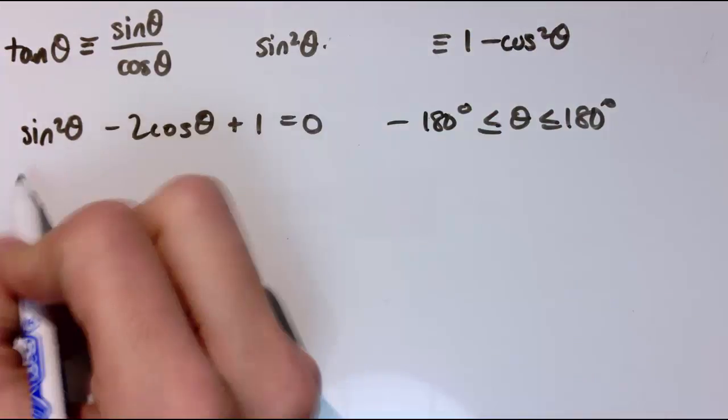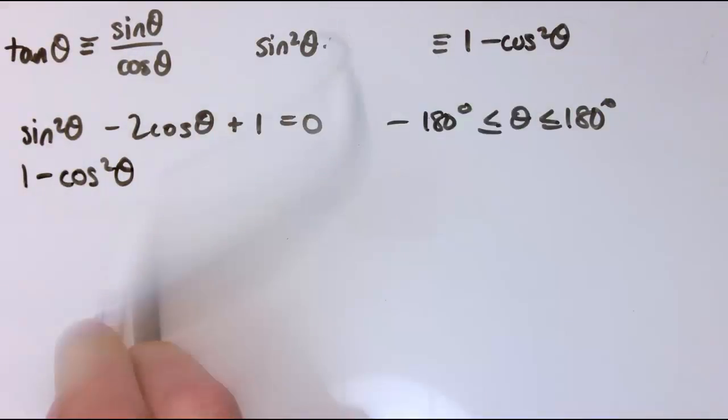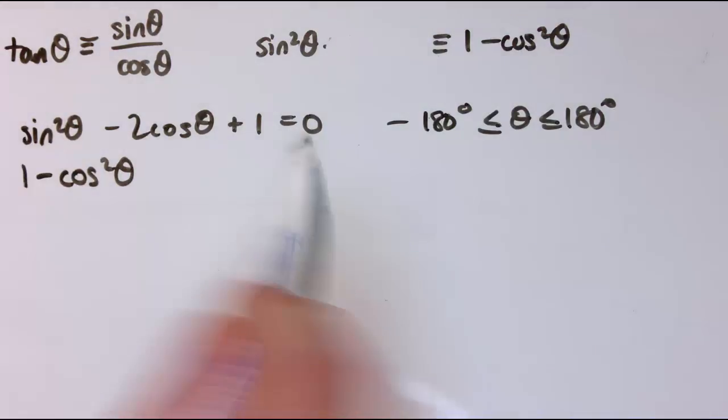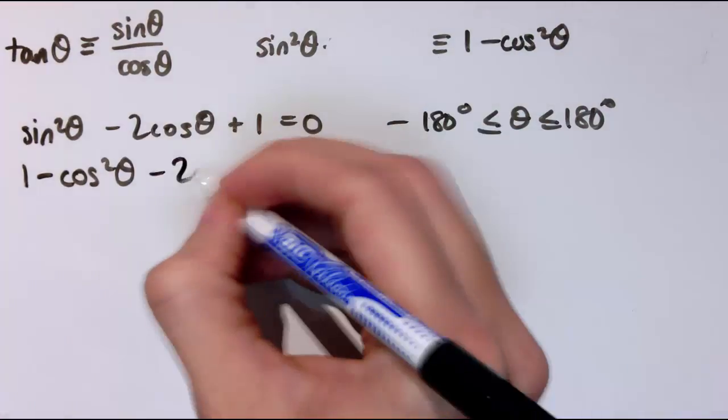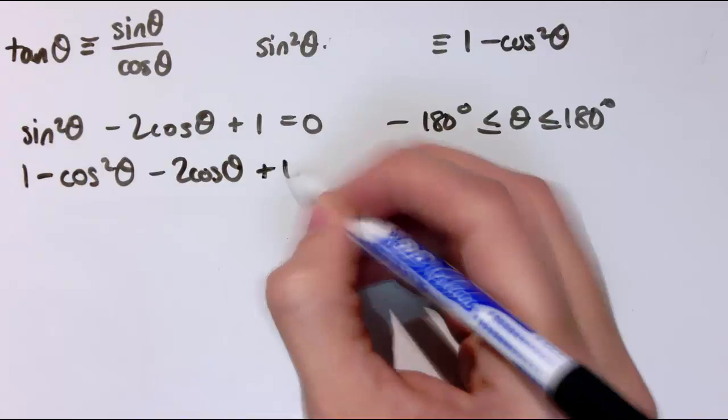I've got sin² θ is 1 minus cos² θ. So I could replace sin² θ with 1 minus cos² θ. Remember, this is an identity, so this is always true. So I can just replace this, different from what I'm doing here, which is solving the equation to find a particular value of θ that makes it work.